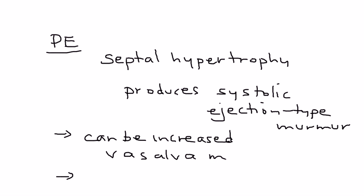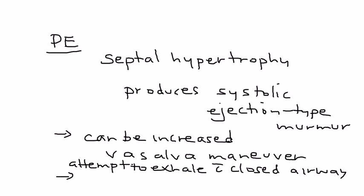This murmur can be increased if you do a Valsalva maneuver. Now, what is a Valsalva maneuver? Basically, it's when you attempt to exhale with closed airways. A perfect example of that with closed airways: so your mouth is closed, you've got both of your nostrils pinched to close them, and you're attempting to exhale. If you do that, this murmur will be increased.